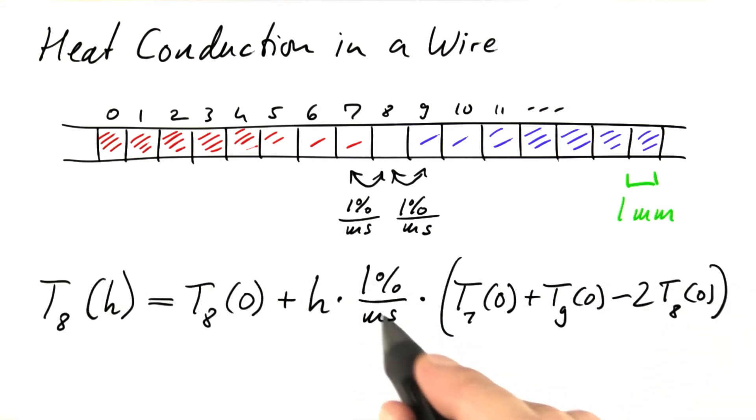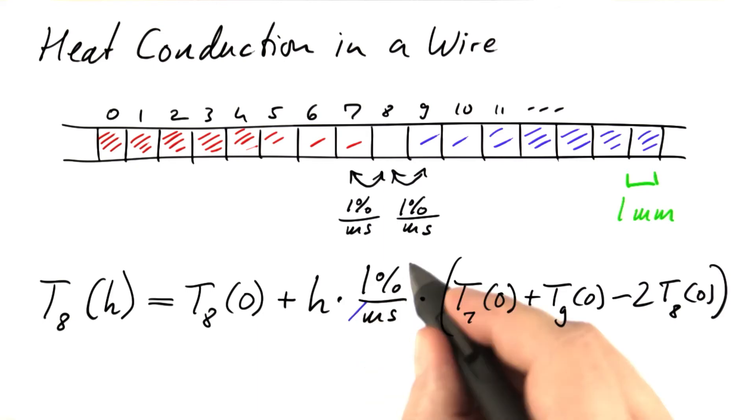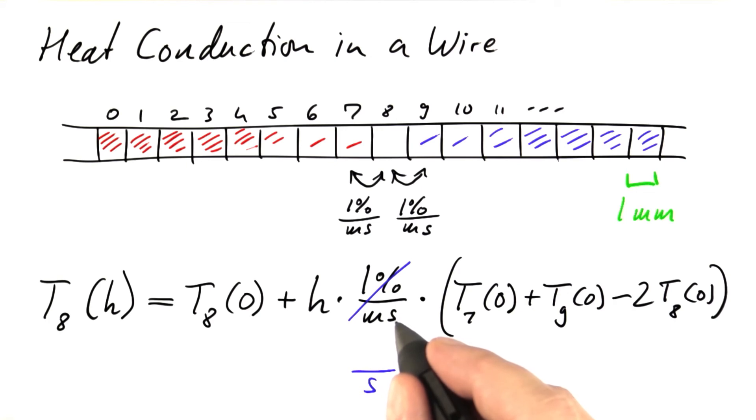One final thing to clean things up a little, let's get rid of this one percent per millisecond here. If we work with seconds instead, one second amounts to 1000 milliseconds, so we need 1000 percent per second. 1000 percent is 10.